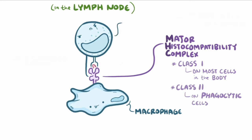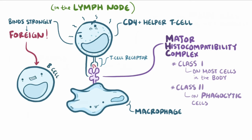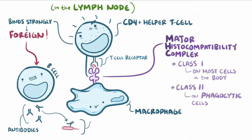A type of T-lymphocyte called a CD4-positive T-cell, also known as a helper T-cell, uses its T-cell receptors to bind to the foreign antigen presented by the MHC class 2 molecule. If the helper T-cell binds strongly, the antigen is recognized as foreign, and the helper T-cell switches on the corresponding B-cell, so it can start producing a whole lot of antibodies. These antibodies bind to the specific pathogen, typically prevent it from attacking the host cells, and at the same time they tag the pathogen for further destruction by other immune cells.